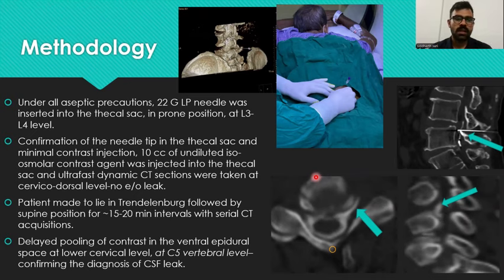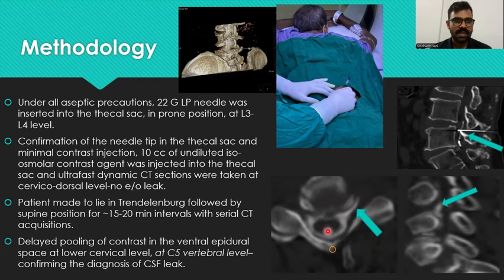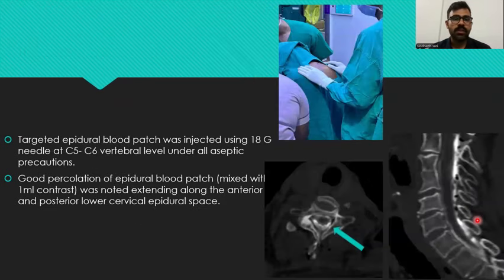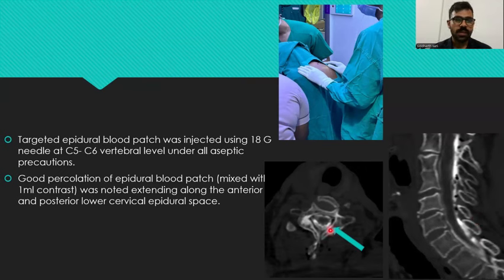The patient was placed supine, then in Trendelenburg position, followed by supine positioning for 15 to 20 minute intervals with serial CT acquisition. There was delayed pooling of contrast in the ventral epidural space at the lower cervical level — C5 — confirming the diagnosis of a CSF leak. Axial and sagittal images confirmed the findings. A targeted epidural blood patch repair was performed using an 18-gauge needle injected at the C5-C6 vertebral level under strict aseptic precautions. Good percolation of the epidural blood patch, mixed with 1 ml of contrast, was noted extending along the anterior and posterior lower cervical epidural space.